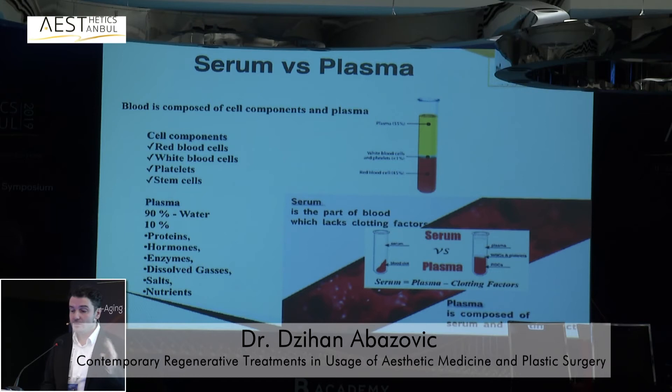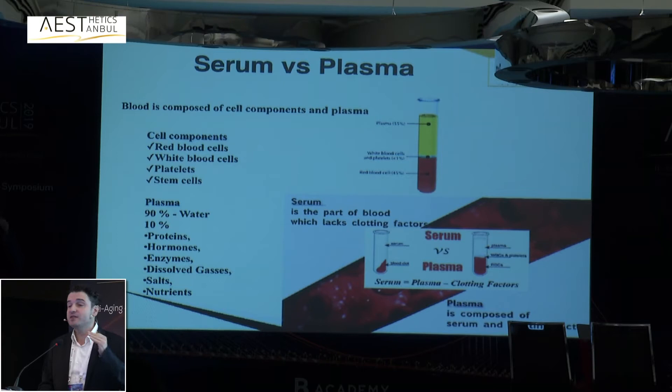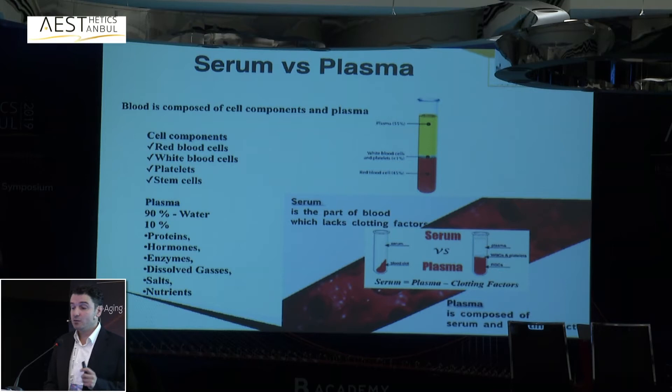When talking about PRP, we first need to make a distinction between serum and plasma. Both contain a lot of proteins, so you will achieve some effect with either. However, the main difference is that plasma contains non-activated clotting factors, while serum does not.